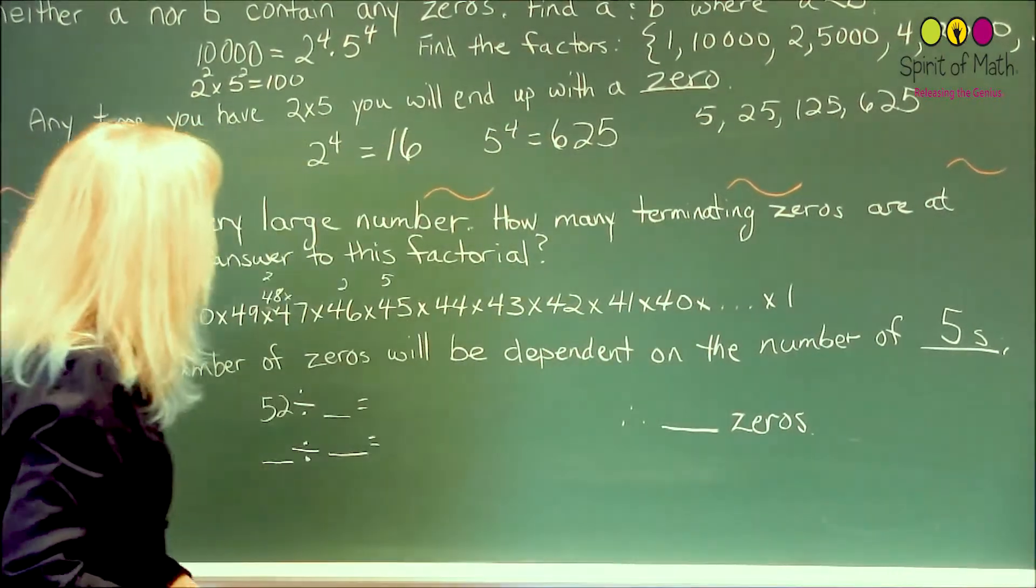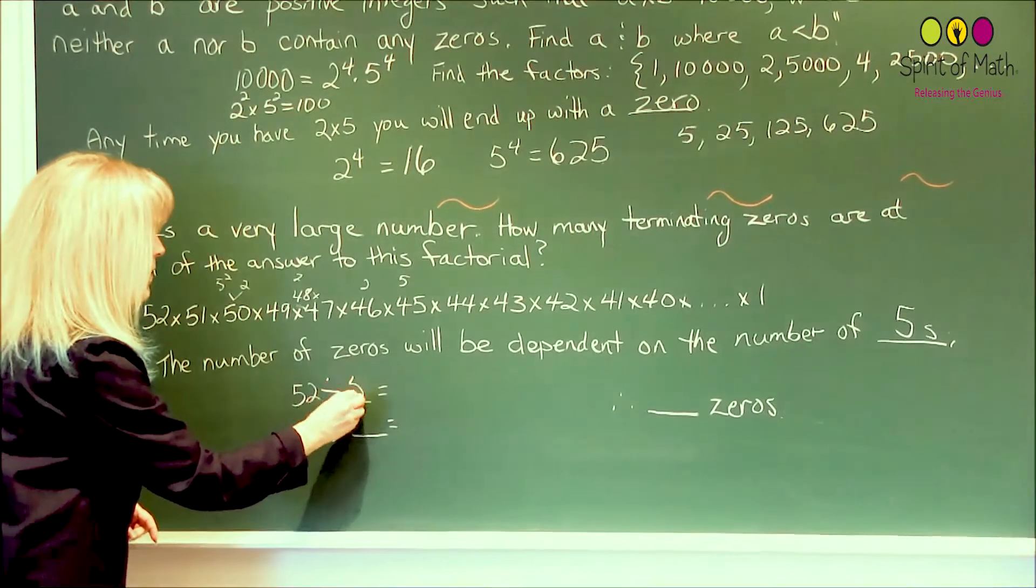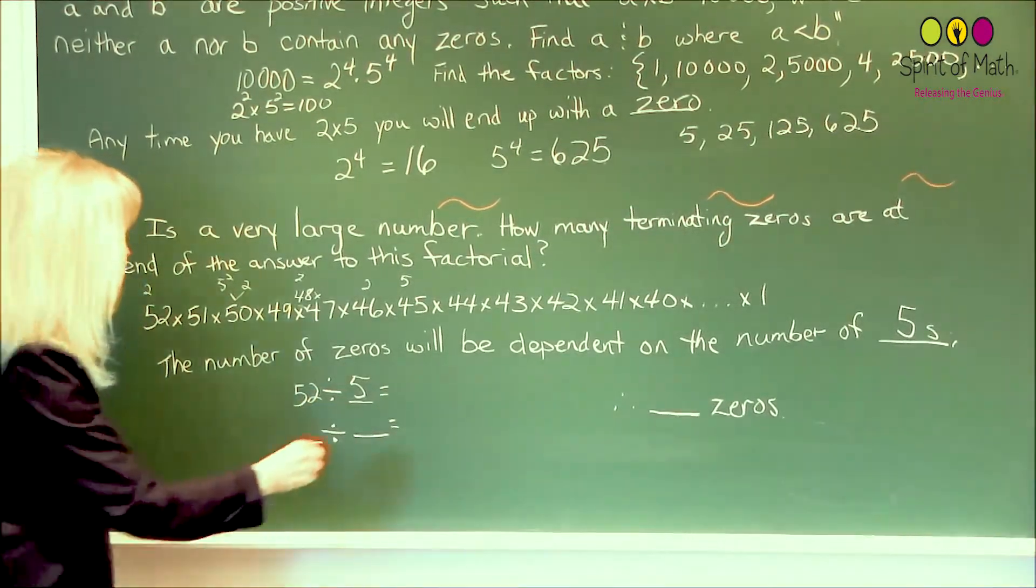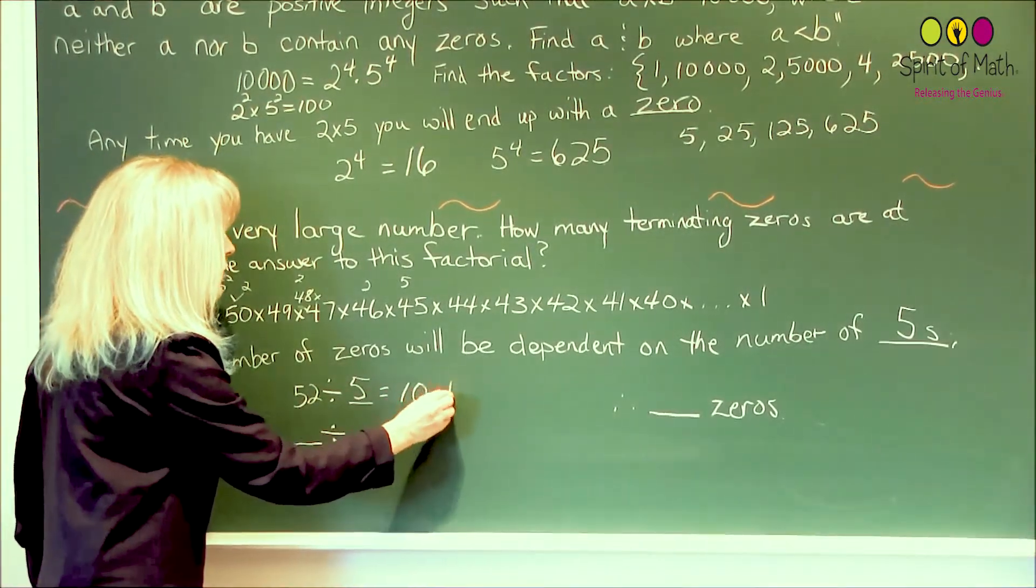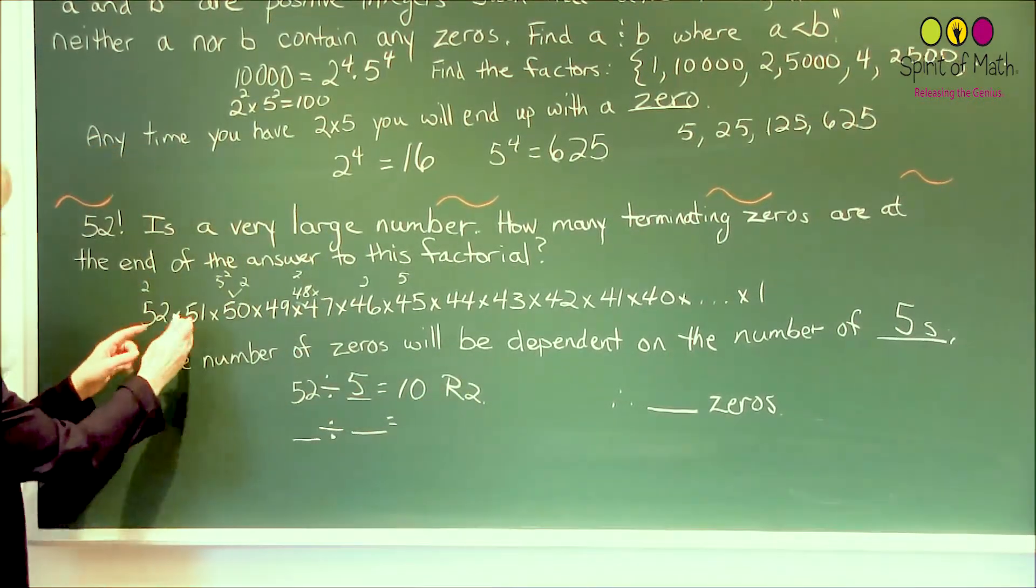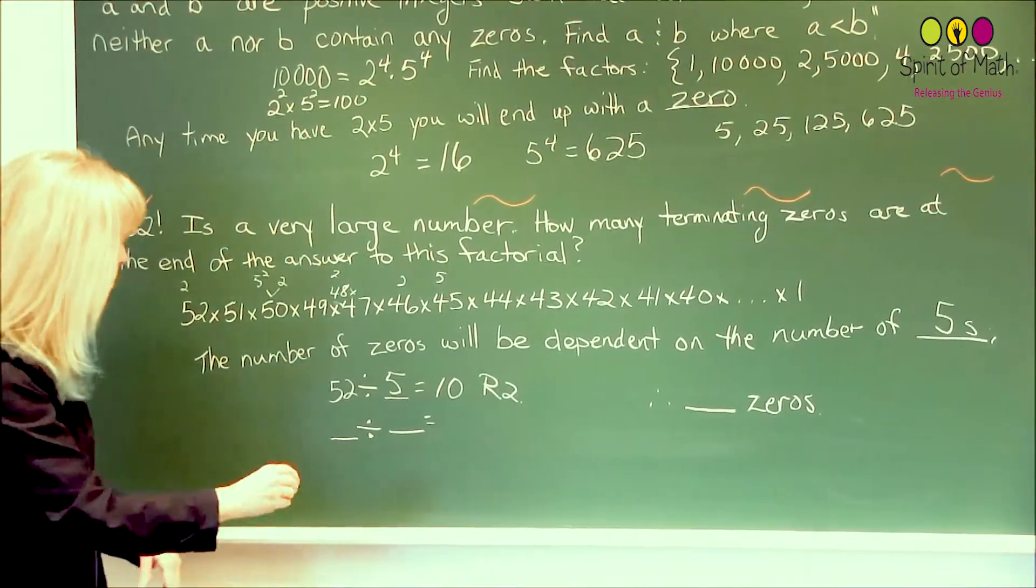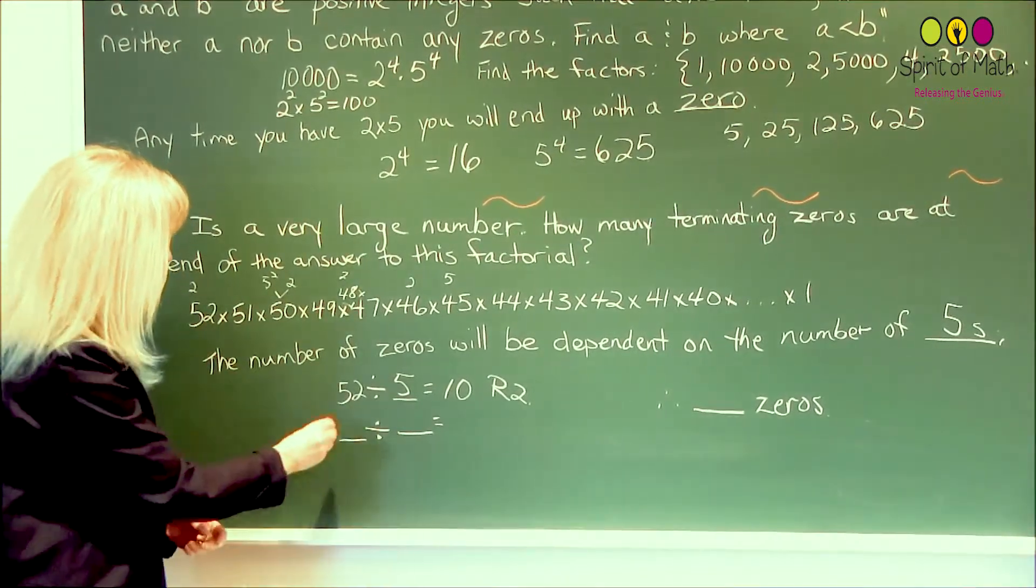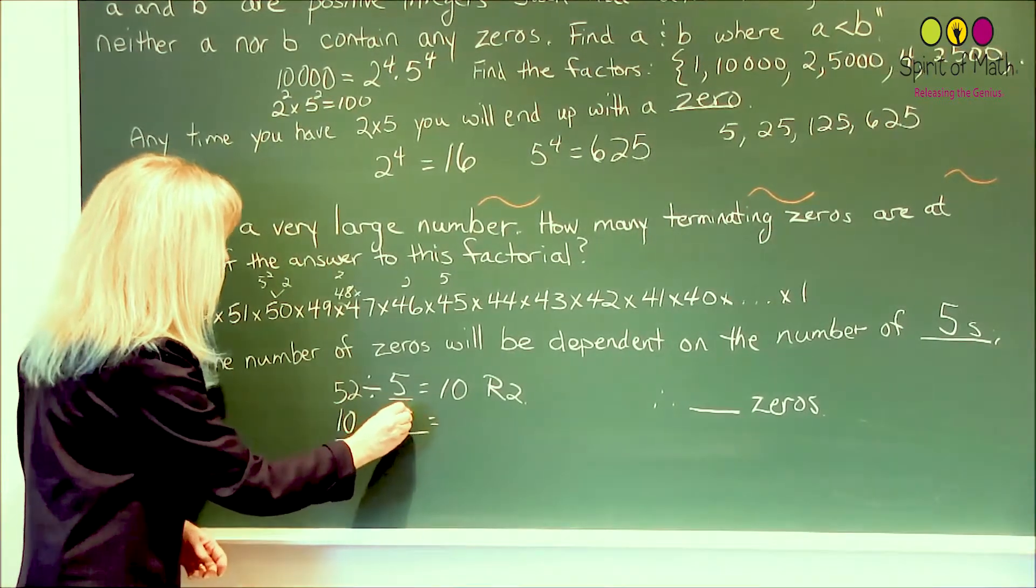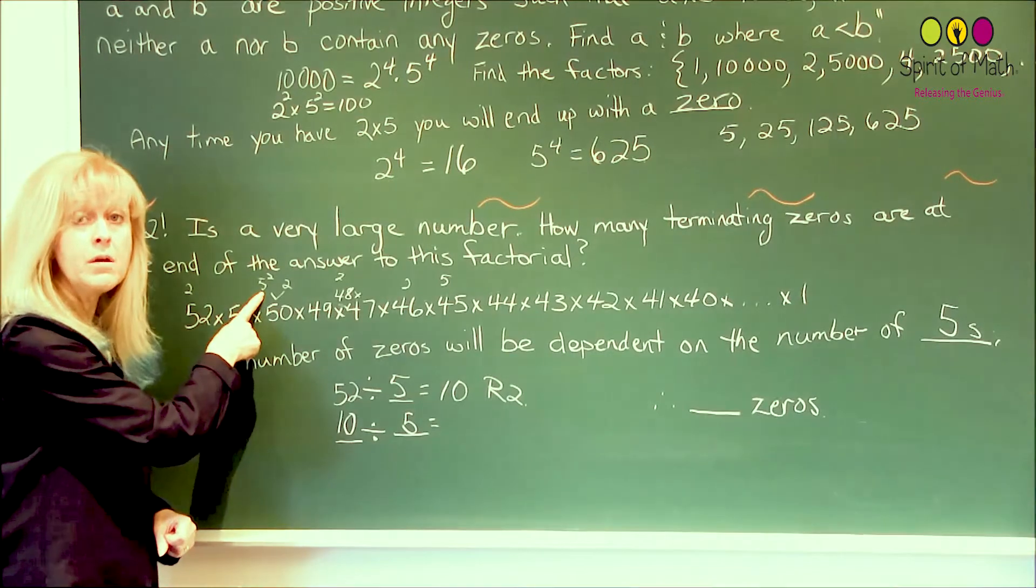So let's figure out how many 5s. If you took 52 and we divided that by 5, right away you can see you have 10. You have a remainder of 2. That's just saying that there's an extra 2 here that don't have a 5, which was shown here. So we're not going to include those. But out of those 10, you want to find out how many have a double 5, because we had a 5 squared up here, for example.